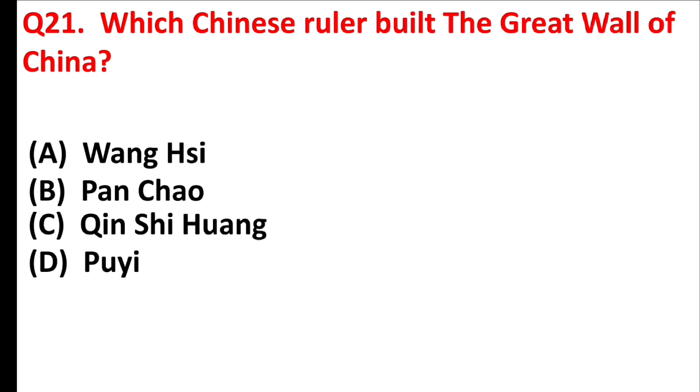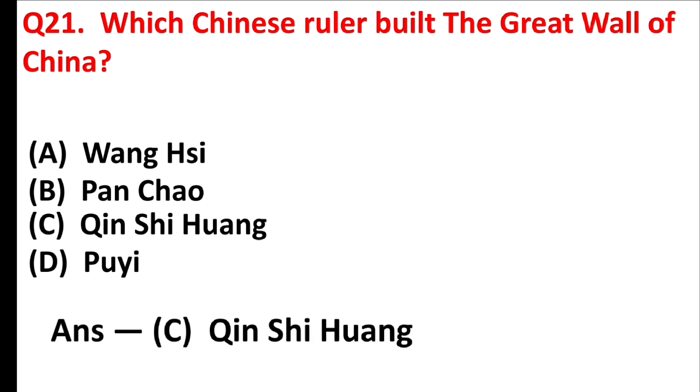Which Chinese ruler built the Great Wall of China? Answer is Option C: Qin Shi Huang.